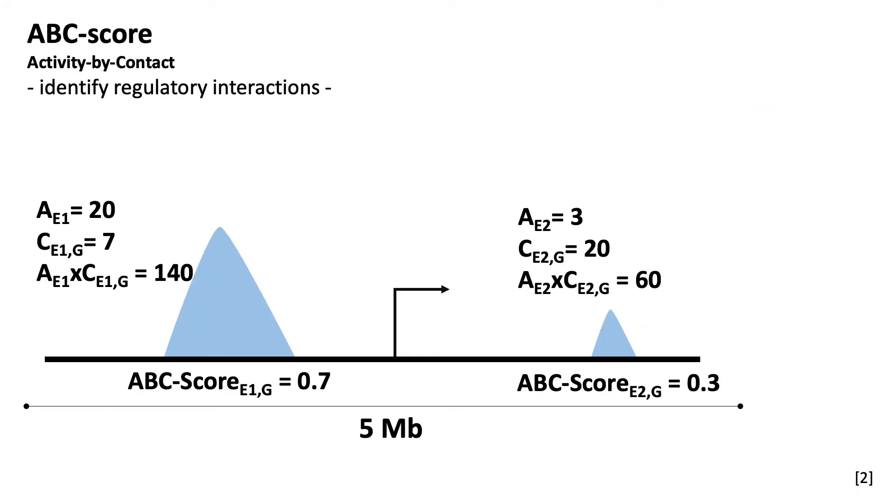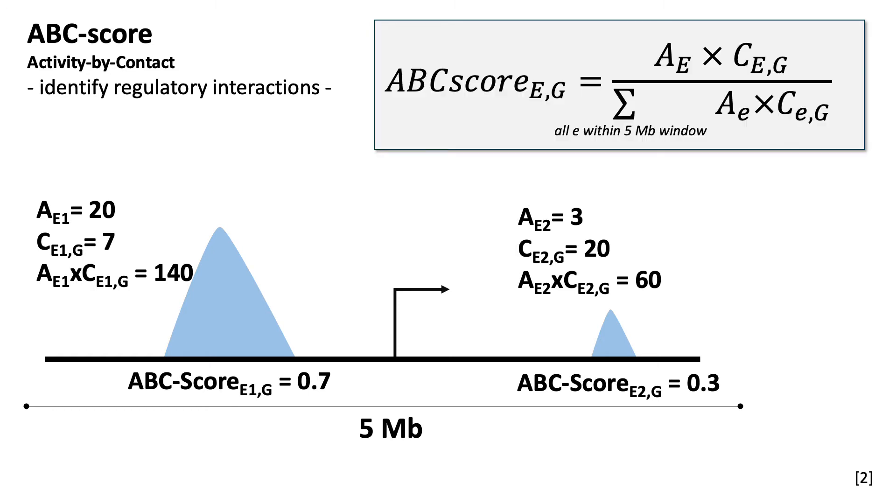First of all, we need some interactions to analyze, and we do so by using the ABC score, the activity by contact score proposed by Fulker and others. The idea is that enhancers that are relevant for a gene have a high activity and also a high contact frequency with the gene. So you look at all the candidate enhancers in a window, calculate the score—activity multiplied with the contact—and then look at their relative contribution to the score for each gene indicated here.